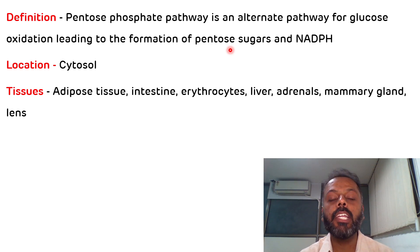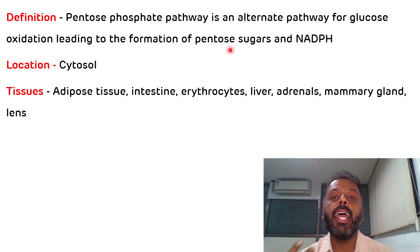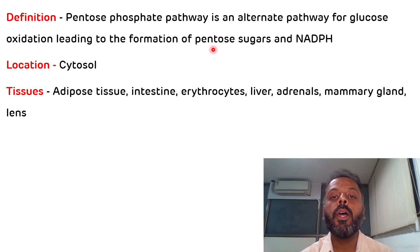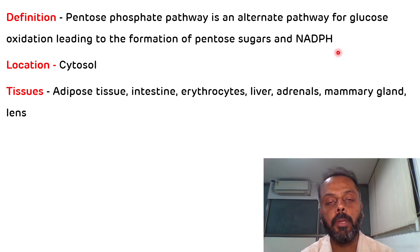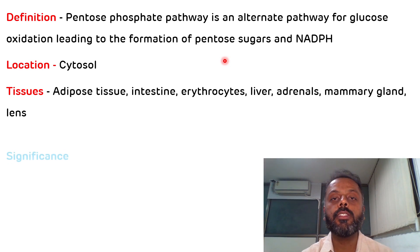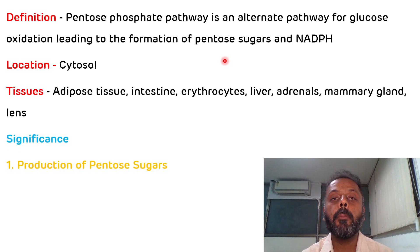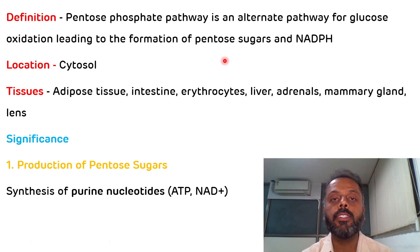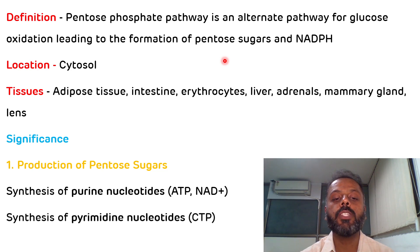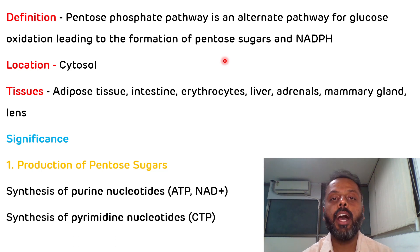Now we will see the significance of the HMP shunt pathway. As discussed, it is concerned with the synthesis of pentose sugars as well as NADPH. This pentose sugar is required for the synthesis of purine nucleotides and pyrimidine nucleotides, and for the synthesis of DNA as well as RNA.